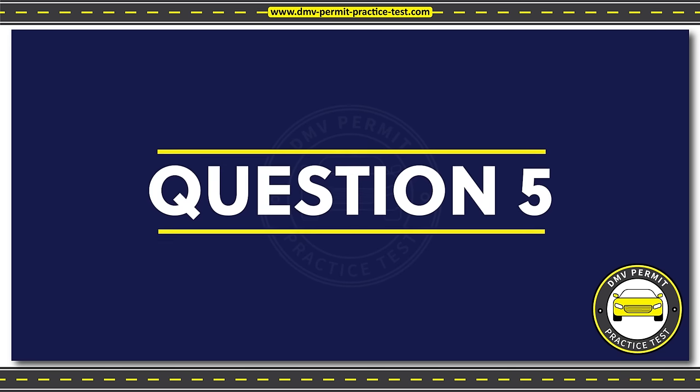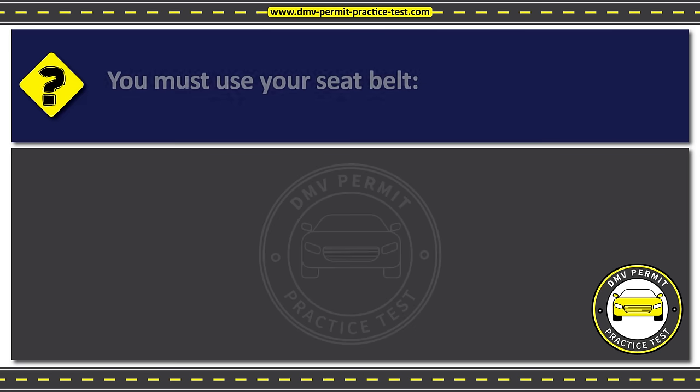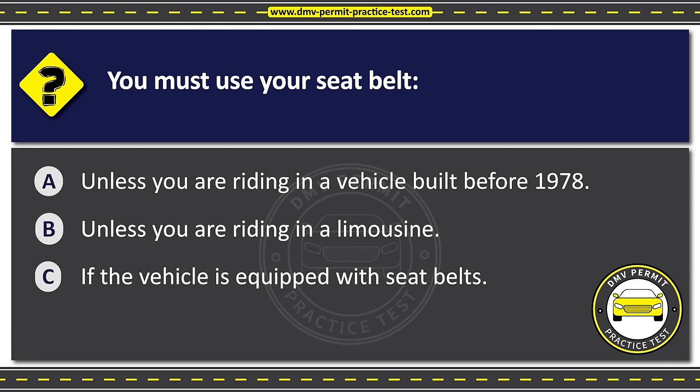Question five. You must use your seatbelt. Option A: Unless you are riding in a vehicle built before 1978. Option B: Unless you are riding in a limousine. Option C: If the vehicle is equipped with seatbelts. The correct answer is Option C: If the vehicle is equipped with seatbelts.